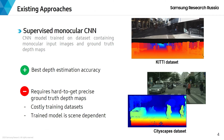Let us briefly review the main existing approaches to monocular depth estimation using deep learning. The most popular approach is of course supervised training of a CNN model on a dataset containing monocular input images and ground truth depth maps. Such an approach allows achieving the best depth estimation accuracy, but it requires precise ground truth depth maps.